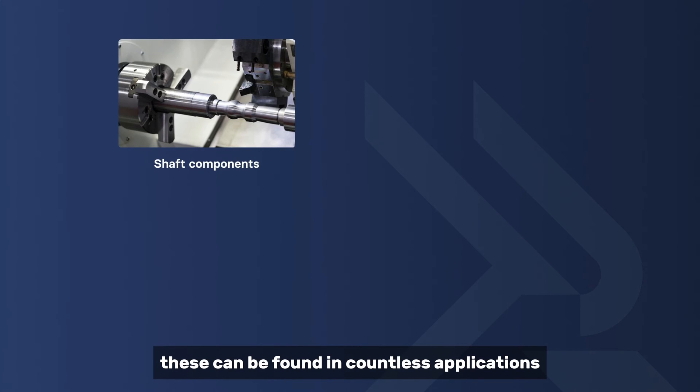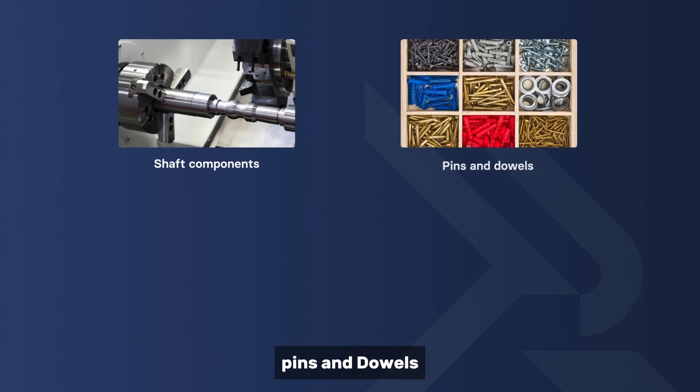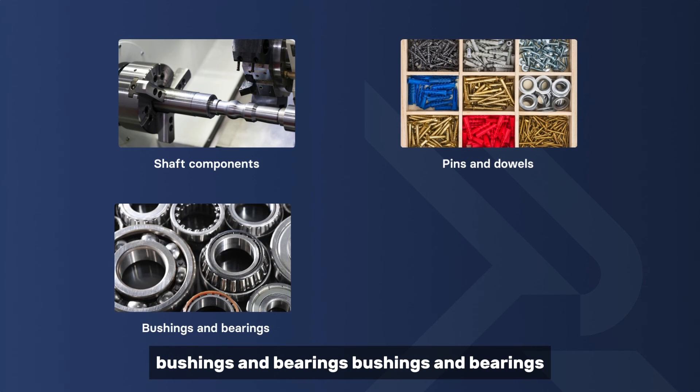Pins and dowels: CNC turning is perfect for creating precision pins and dowels used for alignment and fastening purposes in mechanical assemblies. Bushings and bearings: Bushings and bearings, crucial for reducing friction and wear in rotating machinery, are often manufactured using CNC turning due to the process's ability to achieve tight tolerances.